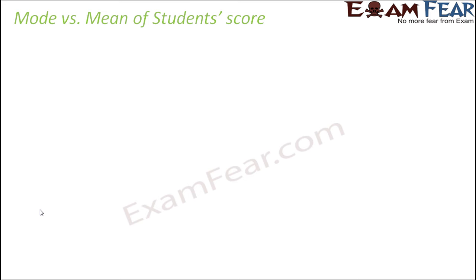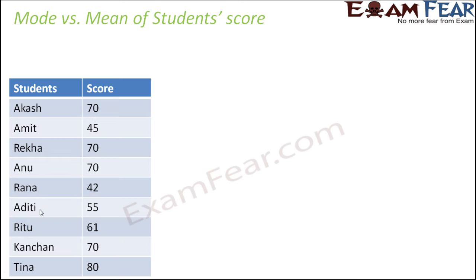Do you think the values of mode and mean of a group of data will always be the same? No — it is not necessary. Sometimes coincidentally the two values can be the same, but there is no such rule. Let us look at a set of data representing scores of different students and find both mean and mode.